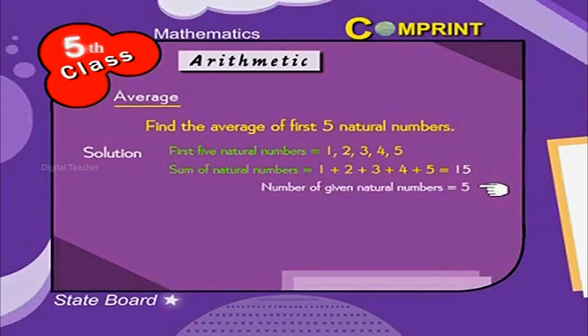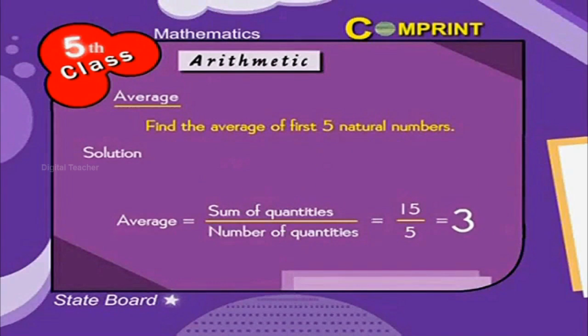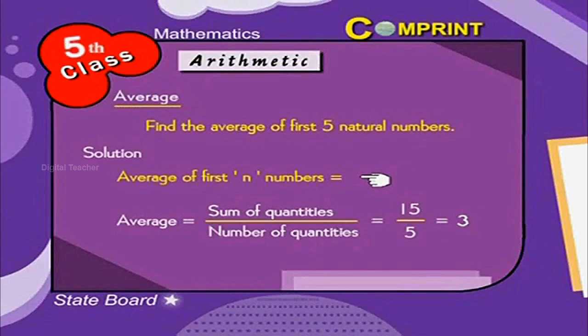Number of given natural numbers is equal to 5. Now let us find the average. Average is equal to sum of quantities by number of quantities. That is 15 by 5 is equal to 3. We can also write average of first n numbers is equal to n plus 1 by 2.